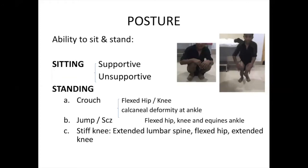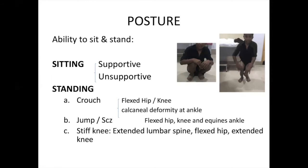There are two types of posture: sitting — whether supportive or unsupportive — and standing gait posture. One may be crouch gait, with flexed hip, knee, and ankle joints. Then there is jump gait with equinus deformity — flexed knee, flexed hip, equinus ankle. When you find jump gait, you must examine for scissoring; if present, it means involvement of the gracilis muscle, which must be addressed in treatment planning.